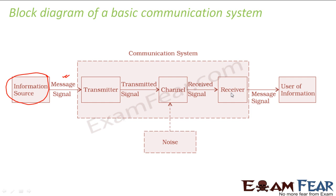That is the received signal. The receiver will convert the signal again into a form which is understandable by the user. So the message signal gets delivered to the user. What was the signal that came out from the source? It was a message signal. And what is the signal delivered to the user? That is again a message signal. So the same information gets carried from one place to another.